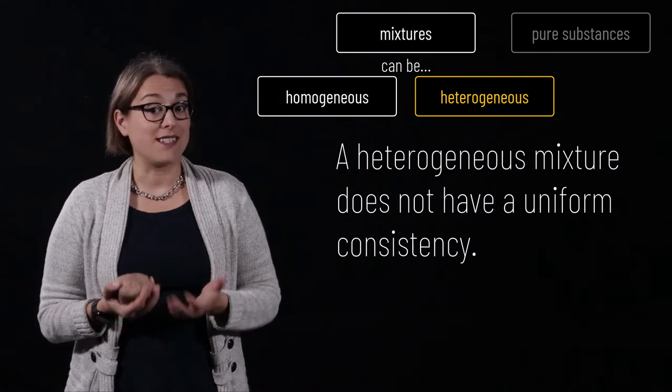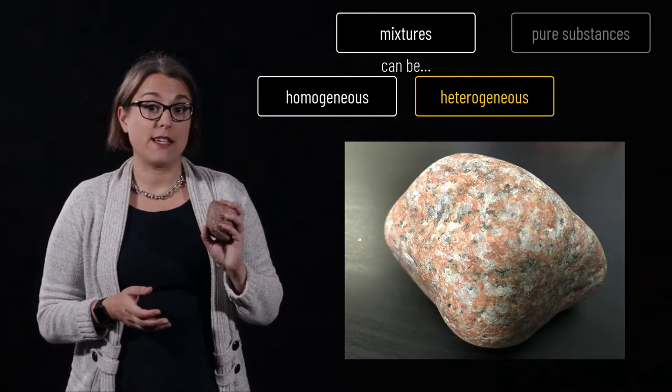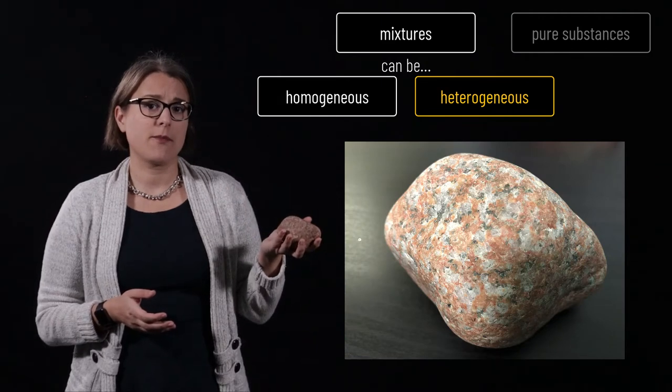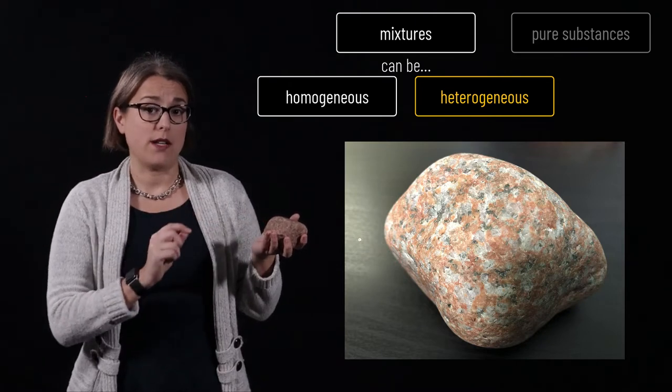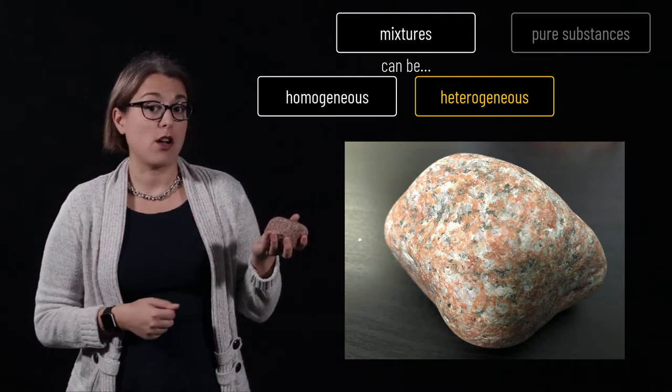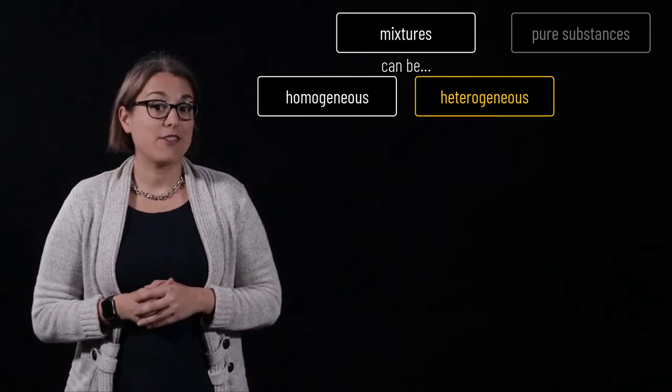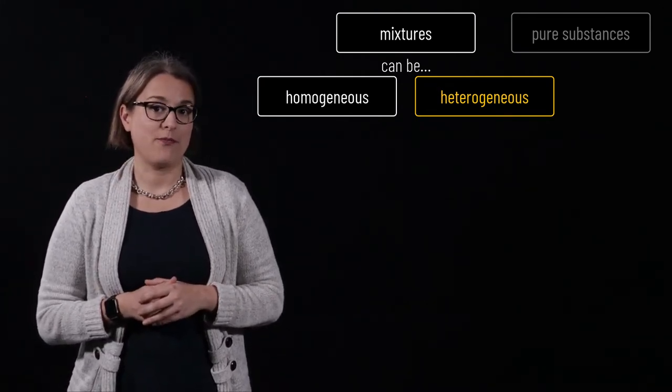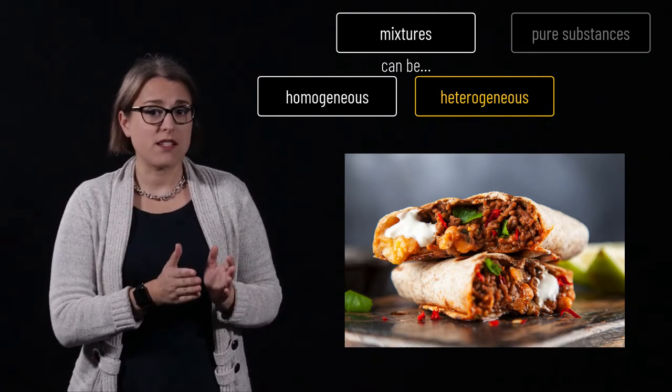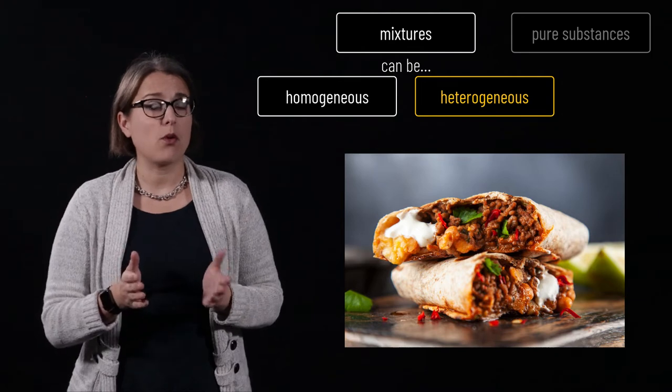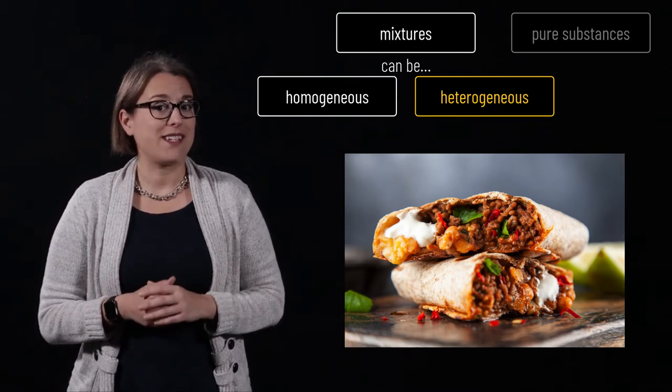A heterogeneous mixture does not have a uniform consistency throughout. Granite, for example, is composed of different materials. If I cut out two pieces of the same size out of this granite, each one might have different amounts of each mineral. A more delicious example of a heterogeneous mixture is a burrito. Maybe you've had a burrito made where one side is mostly lettuce, and in the middle is mostly sour cream, and the meat is all the way over to the other side. Depending on where you bite, you're going to get a different taste.